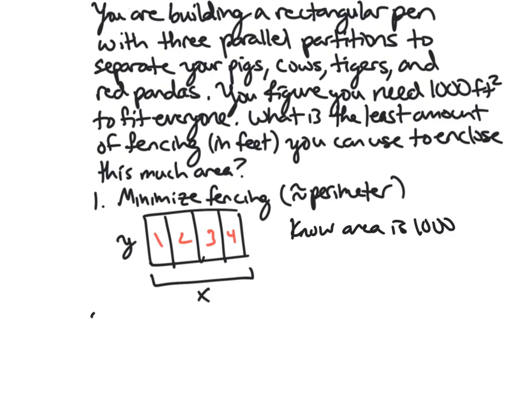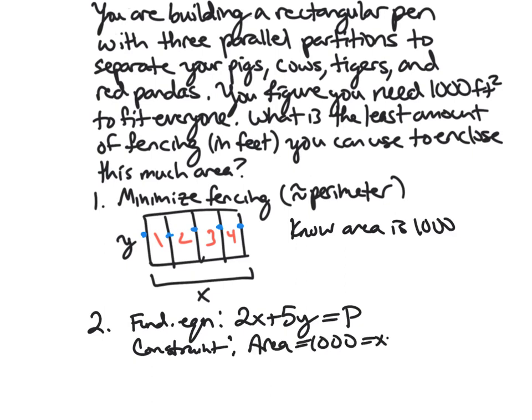And so now we're ready to get our relevant equations. So our fundamental equation, in this case, we are trying to minimize the amount of fencing. So if I look at my picture here, I've got 1, 2, 3, 4, 5 different things for Y and 2 for X when I'm adding up all that fencing. And so this is going to be 2X plus 5Y. And we can call it P for perimeter. And then, of course, we know we have our constraint as well. We have the area, which is 1,000. And that's just X times Y.